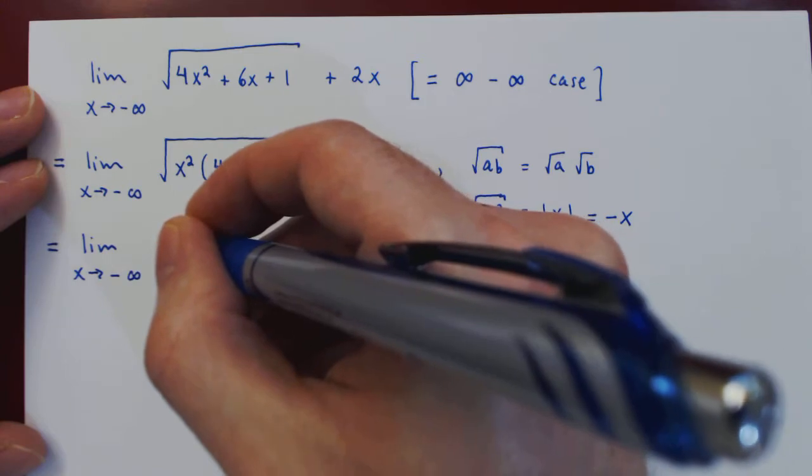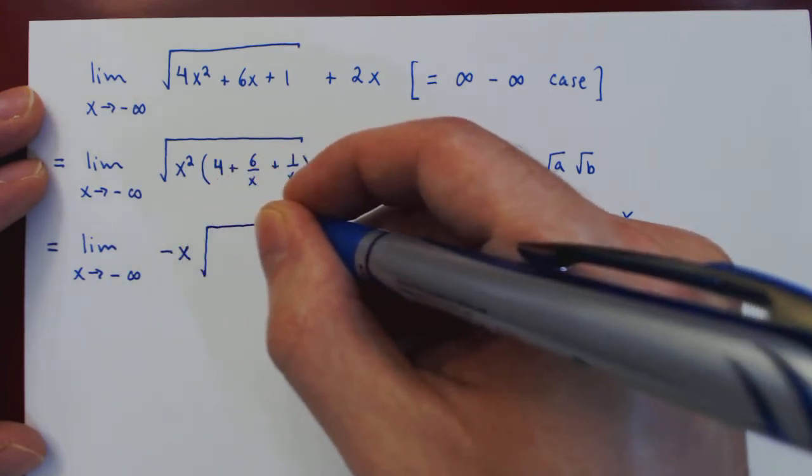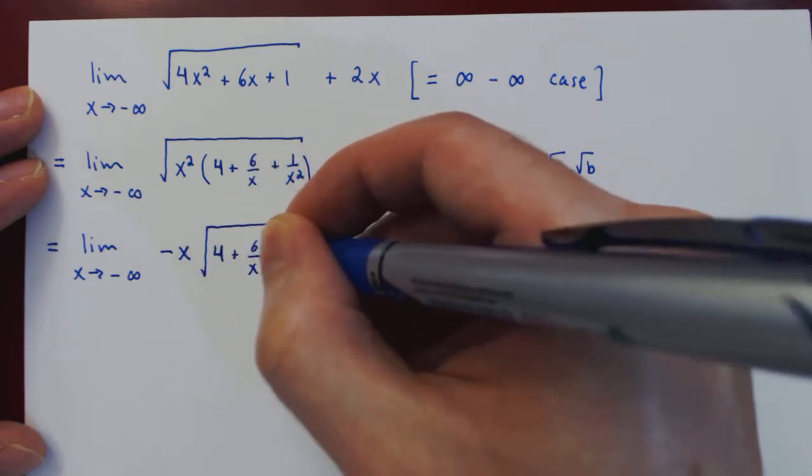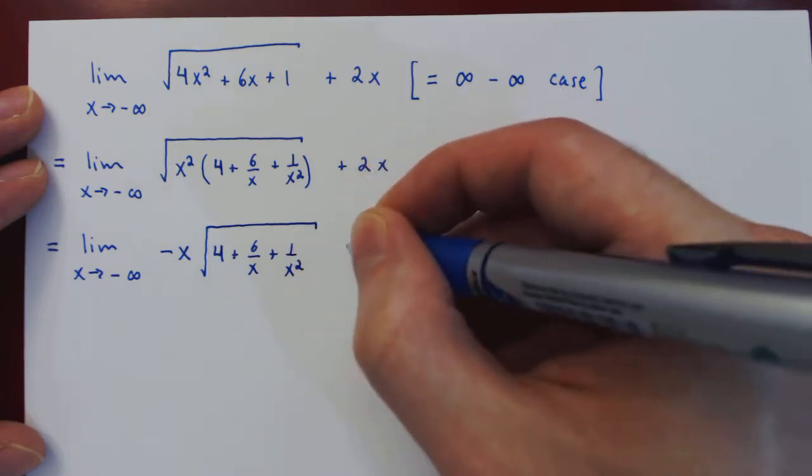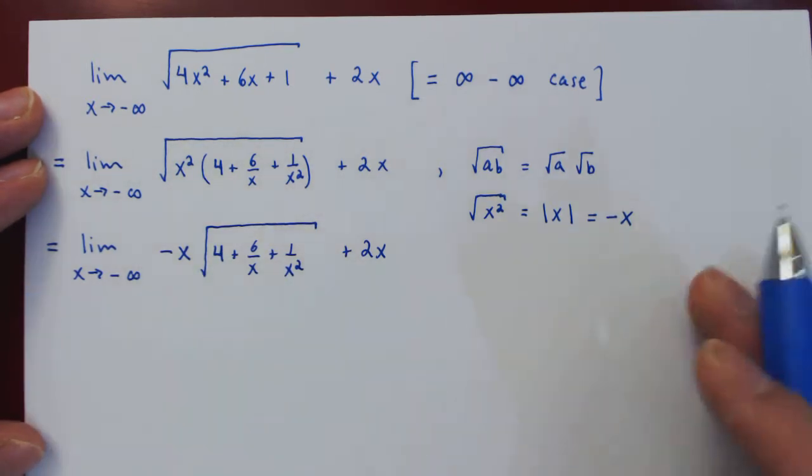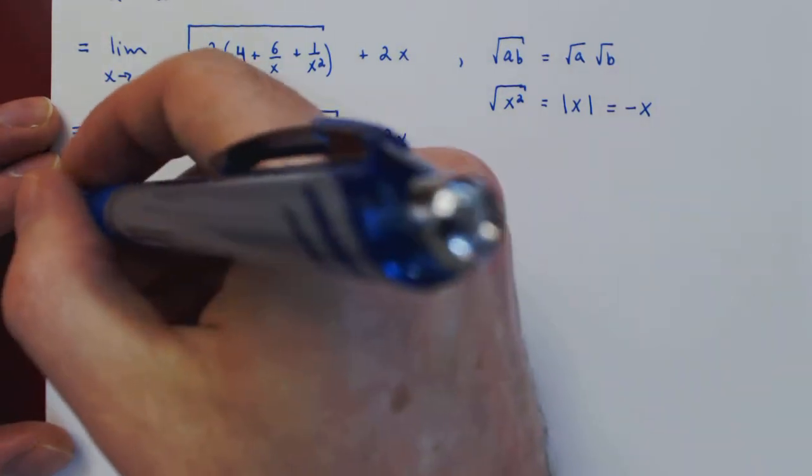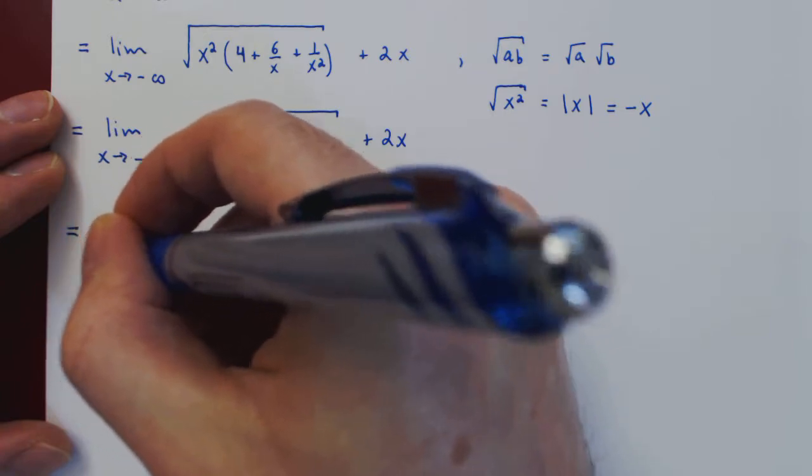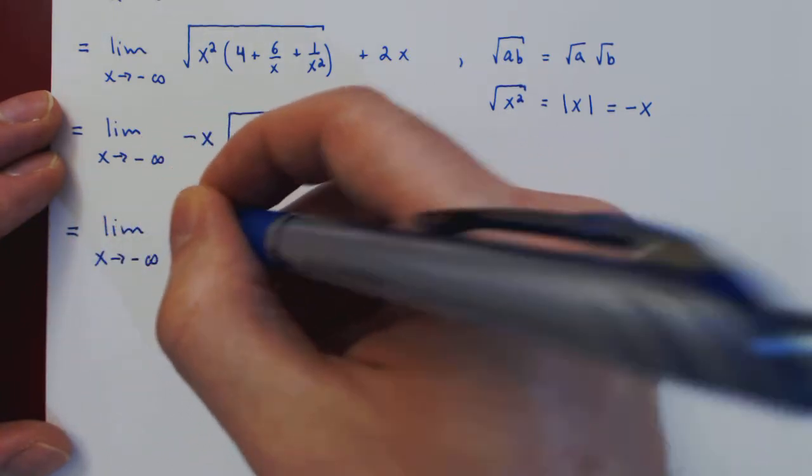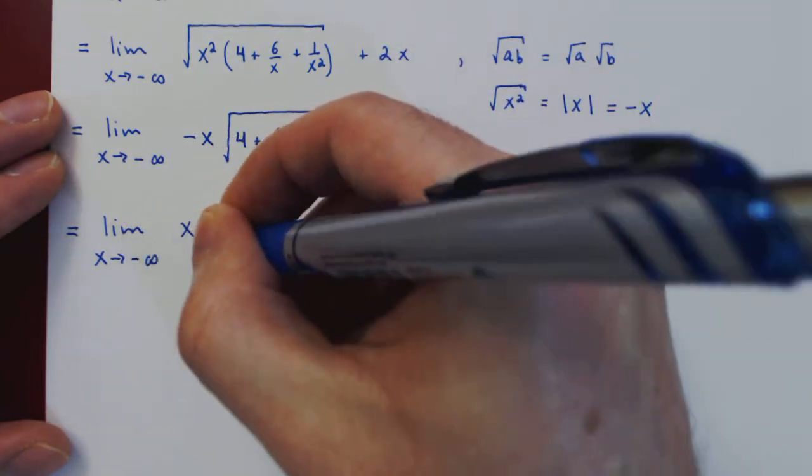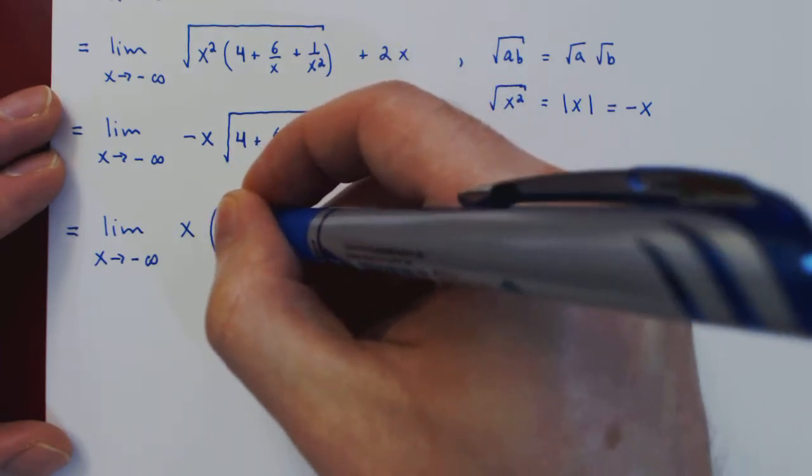So we have in the first case negative x times the square root of the second term, no changes there, and then positive 2x. Well now x, the common multiple of the first and second terms, we can factor x from the expression. You could also if you want factor in negative x, but that's not necessary.